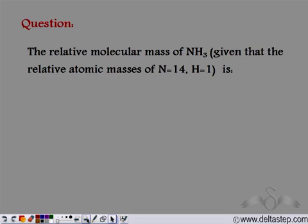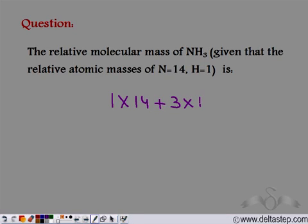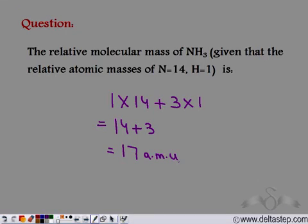For ammonia (NH₃), we are given the relative atomic masses of nitrogen and hydrogen. To calculate the relative molecular mass of ammonia, we add the relative atomic masses of each element: one atom of nitrogen (RAM = 14) and three atoms of hydrogen (RAM = 1 each). So we get 14 + 3 = 17 atomic mass units. The relative molecular mass of one molecule of ammonia is 17 atomic mass units.